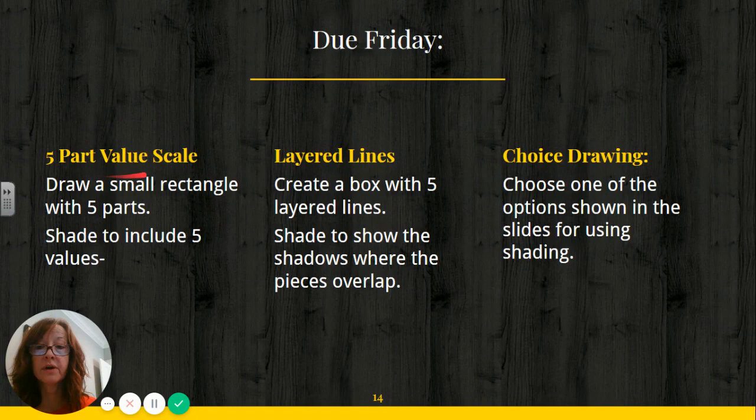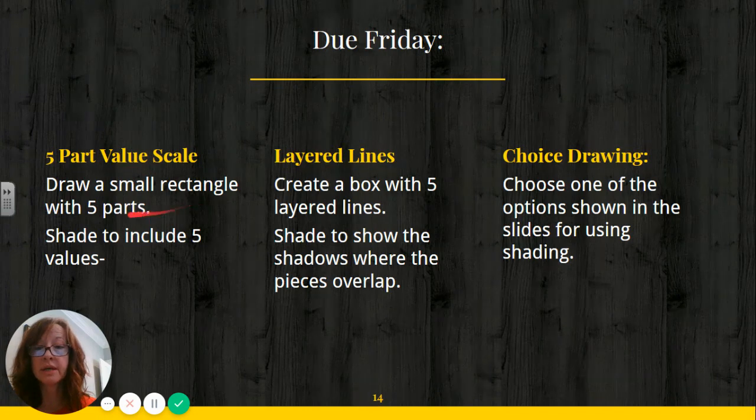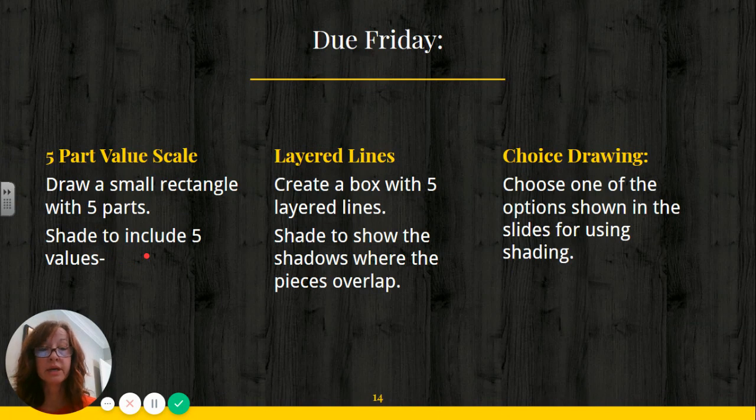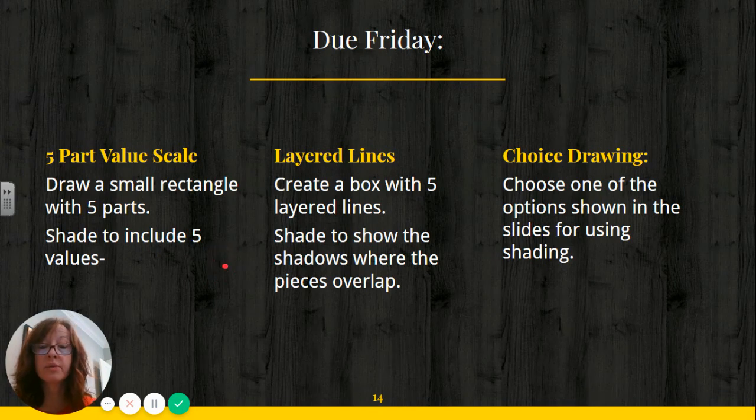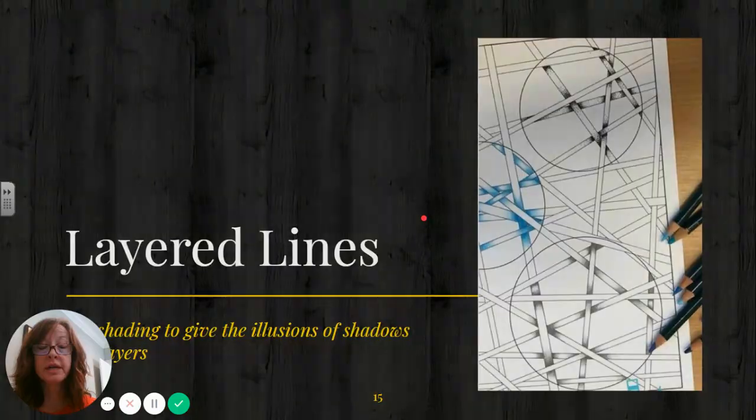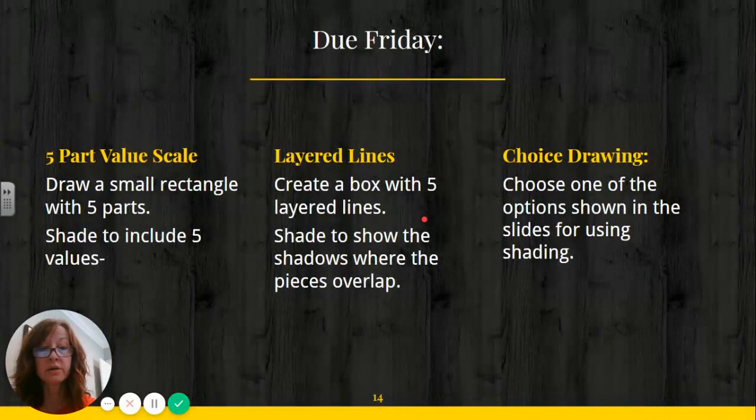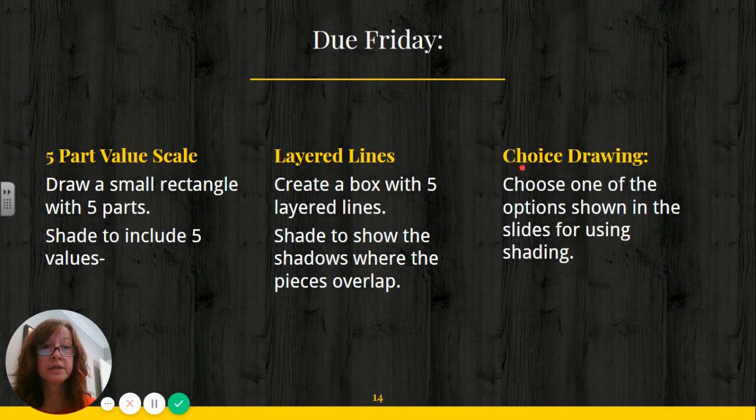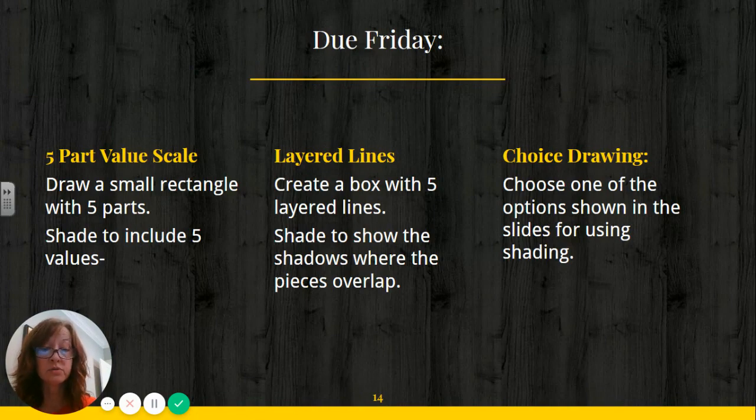One, we're going to do a five-part value scale. You're basically just going to draw a small, longer rectangle, divide it into five parts, and you're going to shade it to include all five values. Keep in mind that the white of the paper is going to be your lightest value. And then the black, as dark as you can get it with the pencil you're using, is going to be your darkest value. And then the gray is in between. Then we're going to do a little activity with layered lines. So basically you're creating a box with five layered lines and you're shading to show where the shadows are. And then you have a choice. So I've included four or five choices. You can choose one of those options. But you need to do at least one option.